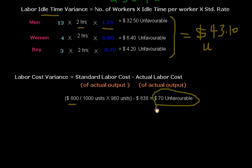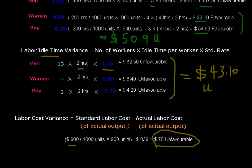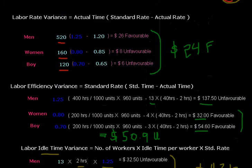The result is $70, which is unfavorable because the standard labor cost is less than the actual labor cost of actual output. Thank you very much.